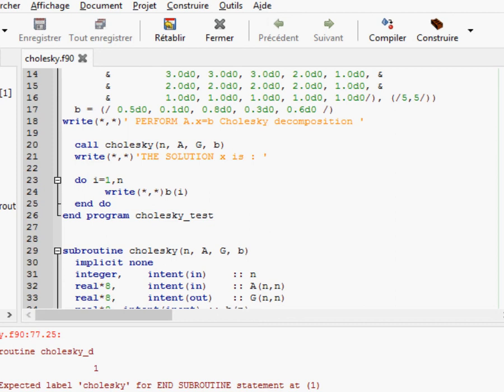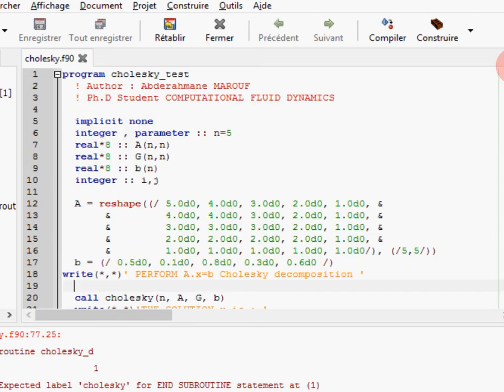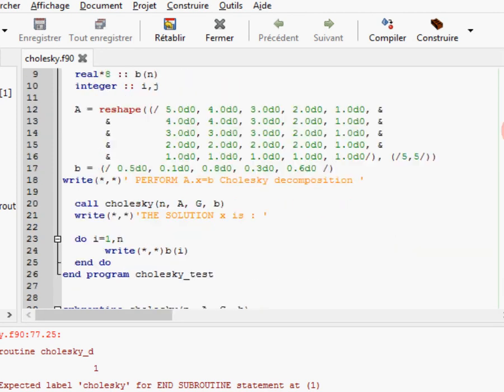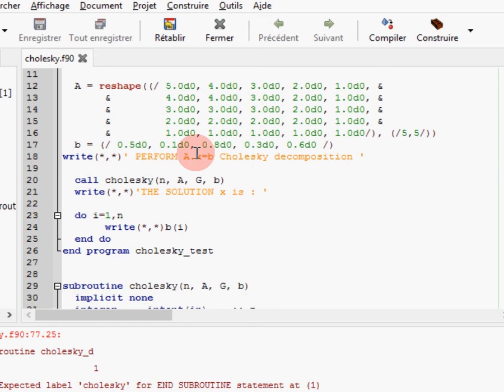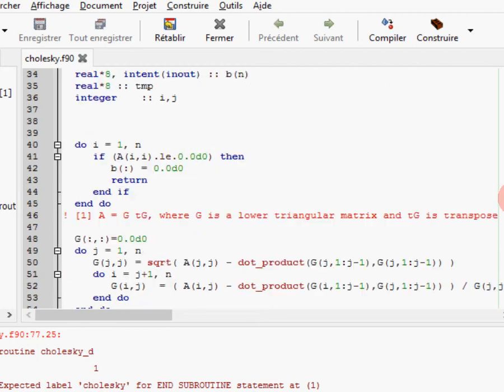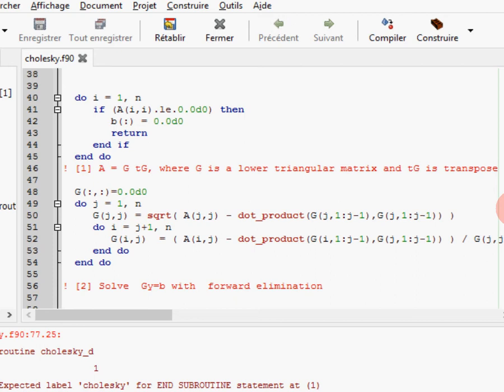Let's look at the code. Here we have the A matrix as I said, and the B vector. Our unknown is X. I made this Cholesky subroutine, so I will explain it.